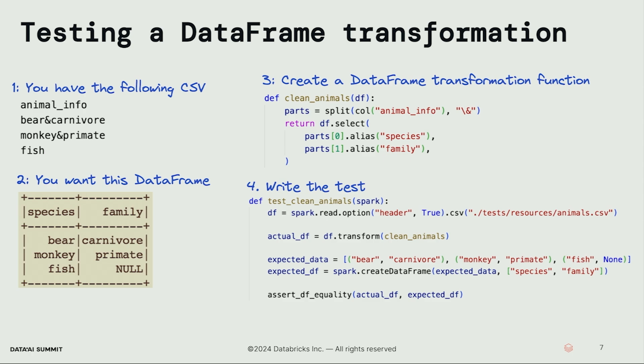When looking at this test from a conceptual perspective, we can see a few basic steps of a unit test: first, we create some sample data; then we invoke the function we're looking to test; then we create some expected value; and then we confirm that the actual computed value equals the expected value. That's the general pattern we're going to see in all of these unit tests.